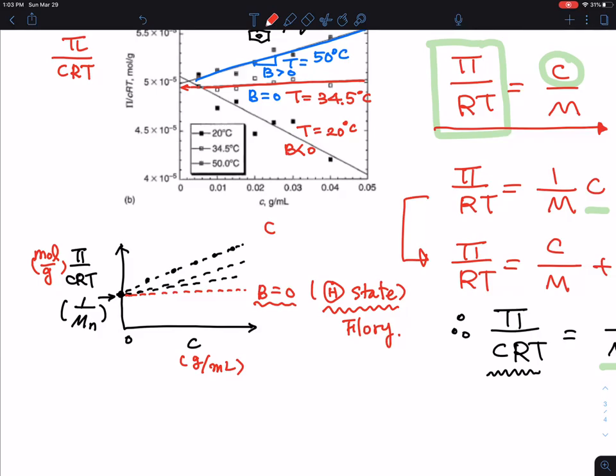Most cases, polymer chains exist with something that looks like a positive slope. This is the case where B is bigger than 0, and this is a good solvent.